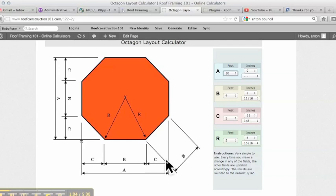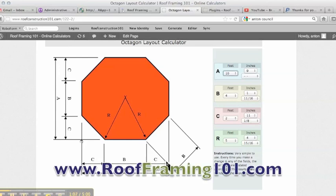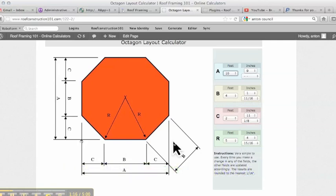And it gives you C, which is the projection, 2 foot 11 and an eighth. And then it gives you the radius, which is going to be to the outside corner, because this is the farthest part, the radius of the octagon, which we see is 5 foot 4 and 15 sixteenths.